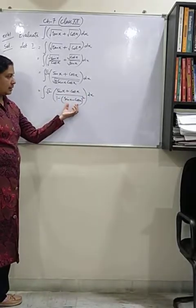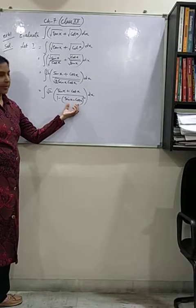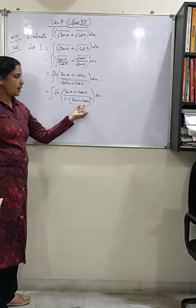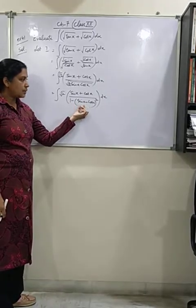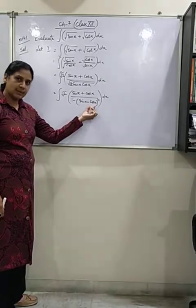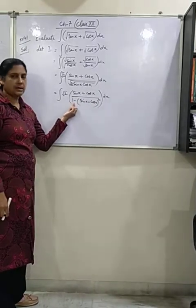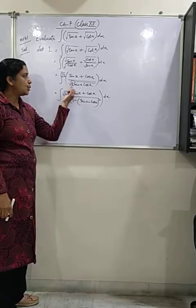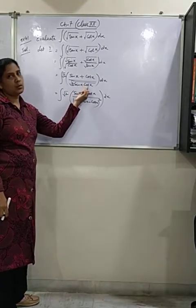When you expand this, it is a minus b whole square. That gives you a square plus b square minus 2ab. That is sin square x plus cos square x, which equals 1 and cancels out with this one. You are left with 2 sin x cos x, which we already had.